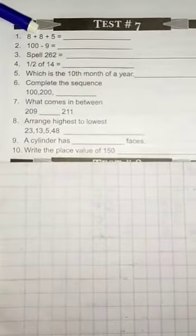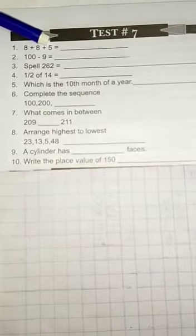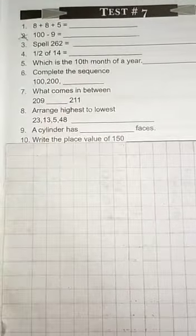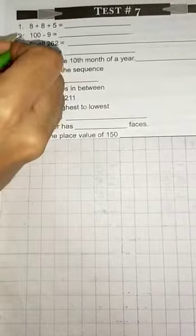8 plus 8 plus 5 is equals to dash. Question number 2. We haven't done 100 yet, so cut this. Question number 3. We haven't done 100, to cut this question also.